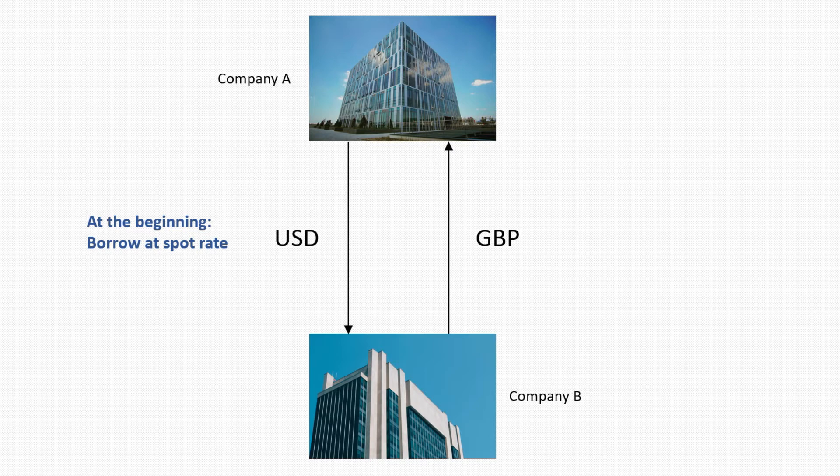At the beginning of the contract, Company A borrows pounds sterling from Company B, and Company B borrows U.S. dollars from Company A at the spot rate.